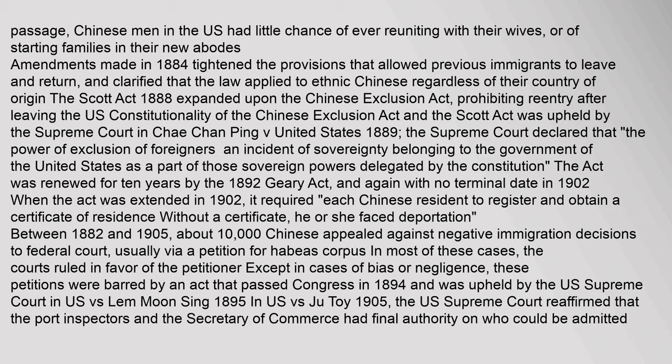The act was renewed for ten years by the 1892 Geary Act, and again with no terminal date in 1902. When the act was extended in 1902, it required each Chinese resident to register and obtain a certificate of residence; without a certificate, he or she faced deportation. Between 1882 and 1905, about 10,000 Chinese appealed against negative immigration decisions to federal court, usually via a petition for habeas corpus. In most cases, courts ruled in favor of the petitioner. These petitions were barred by an act passed by Congress in 1894, upheld by the U.S. Supreme Court in U.S. v. Lem Moon Sing in 1895. In U.S. v. Ju Toy in 1905, the Supreme Court reaffirmed that port inspectors and the Secretary of Commerce had final authority on who could be admitted.